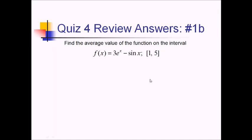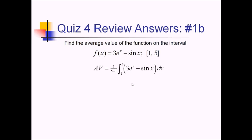For this problem, we want the average value of this transcendental function from 1 to 5. So I'm going to have 1 over b minus a, which is 5 minus 1, times the integral from 1 to 5 of 3e to the x minus sine of x dx. Taking the antiderivative, I've got a 1 fourth out in front. The antiderivative gives me 3e to the x, and then the antiderivative of negative sine of x is positive cosine of x.